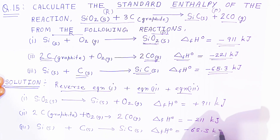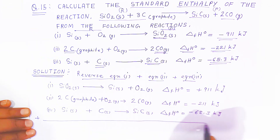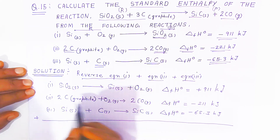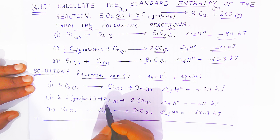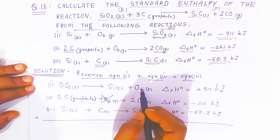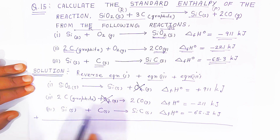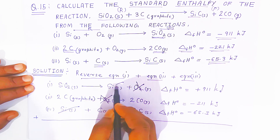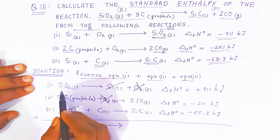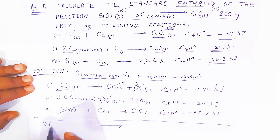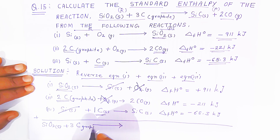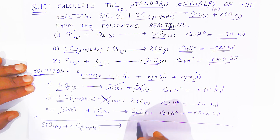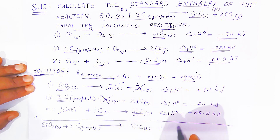When you add all these reactions, cancel the similar terms appearing on both sides. Oxygen is present on the reactant side and cancels with oxygen on the product side. Silicon on the reactant side cancels with silicon on the product side. What remains on the reactant side is silicon oxide plus three carbon graphite. On the product side you get silicon carbide and two moles of carbon monoxide.